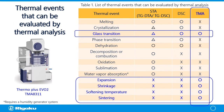Here is a list of thermal events that can be evaluated by thermal analysis such as STA, DSC, and TMA. Since our topic today focuses on thermomechanical analysis or TMA, the reactions that can be evaluated with TMA are glass transition, expansion, shrinkage, detection of softening temperature, and sintering behavior.